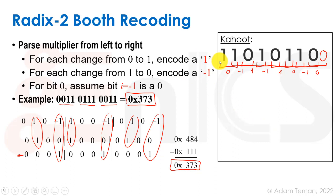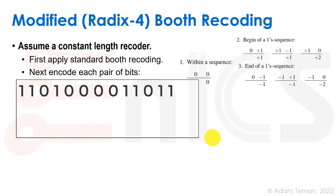Radix 2 Booth recoding tried to maximize zeros for serial multiplication, but that doesn't help in a parallel array multiplier since we must implement every partial product regardless. However, the same concept can reduce the number of partial products — and fewer partial products means a shorter critical path. Modified Booth recoding achieves this by encoding two bits at a time, extending the digit set to {0, +1, −1, +2, −2}.